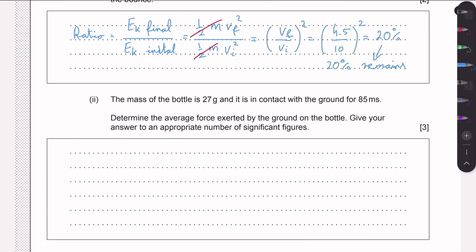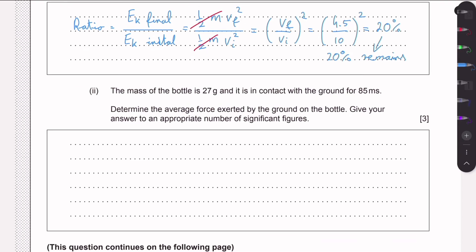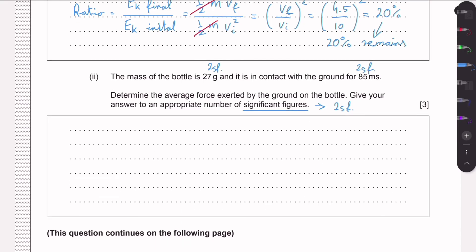In part D, we're given the mass of the bottle and that it was in contact with the ground for 85 milliseconds. We need to calculate the average force exerted by the ground on the bottle, giving our answer to an appropriate number of significant figures. The given data has two significant figures, so our final answer must also be to two significant figures — likely worth one mark explicitly.